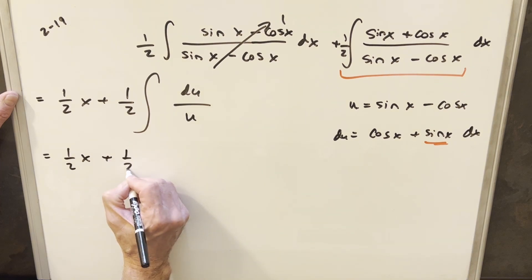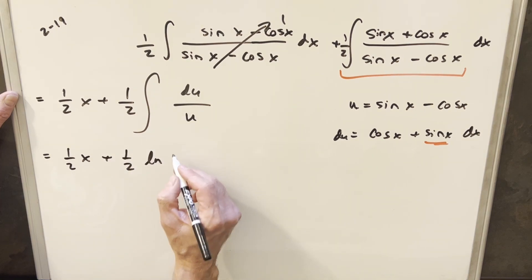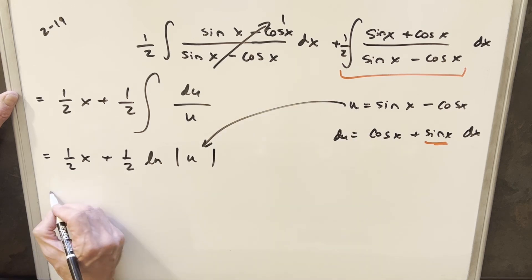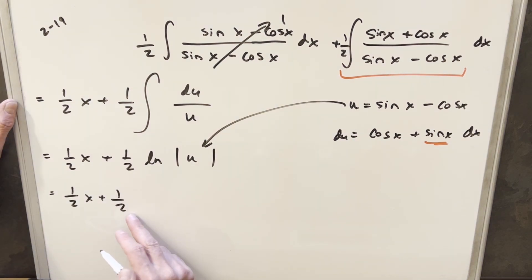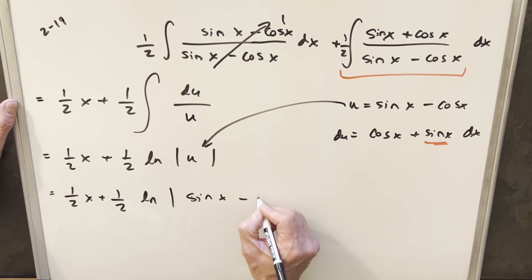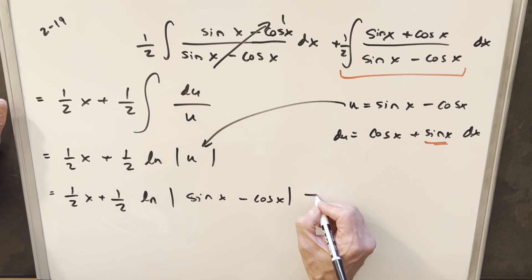We'll bring down our half x. But this is actually going to be just natural log of absolute value of u. And to finish it off, I can just back substitute right here. So for our final solution, we're going to have one half x plus one half natural log absolute value of this thing, which is sine x minus cosine x plus c.